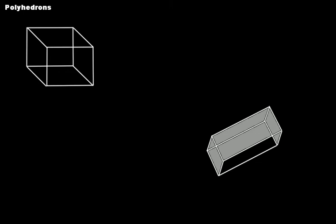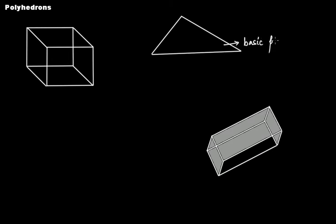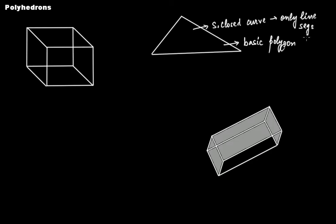Let's learn what polyhedrons are. We are all aware of polygons. A triangle is the most basic form of a polygon. It is a polygon because it's a simple closed curve made up of only line segments. In the case of a triangle, we have three line segments that make it a polygon.